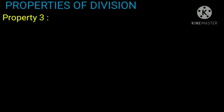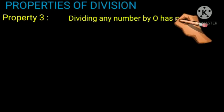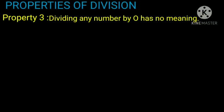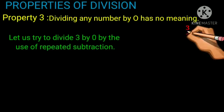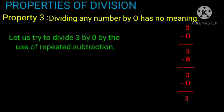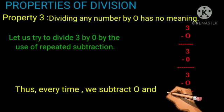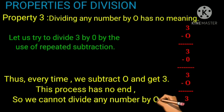Property 3: Dividing any number by 0 has no meaning. For example, let us try to divide 3 by 0 using repeated subtraction. 3 minus 0 equals 3, and again 3 minus 0 equals 3, and again 3 minus 0 equals 3. Every time we subtract 0 we still get 3 — this process has no end. So we cannot divide any number by 0.